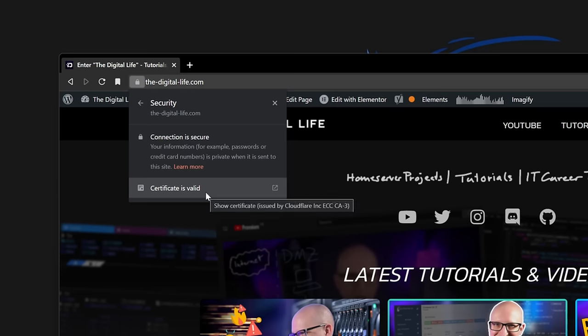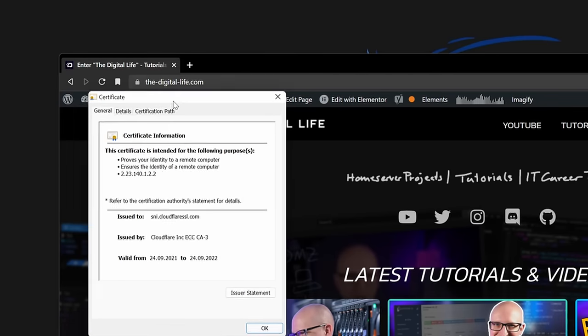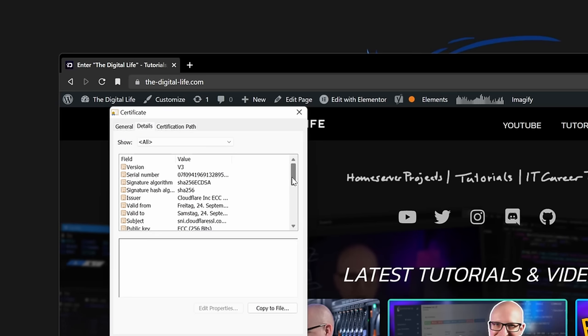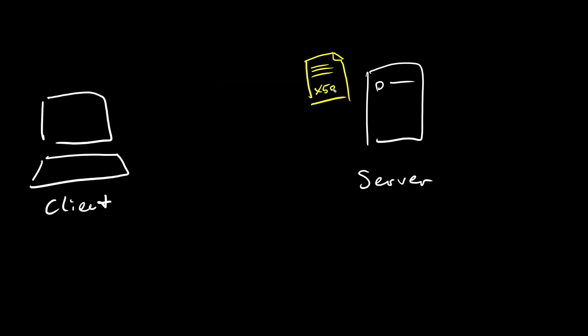To understand how this works, we need to first look inside an SSL certificate and find out what it contains. SSL certificates are written in the X.509 standard, which is a format for defining public key certificates. All SSL certificates have a public key that the client can use to send encrypted messages to the server. This is called asymmetric encryption — there are always two parts: the public key to encrypt messages and a corresponding private key to decrypt the messages.